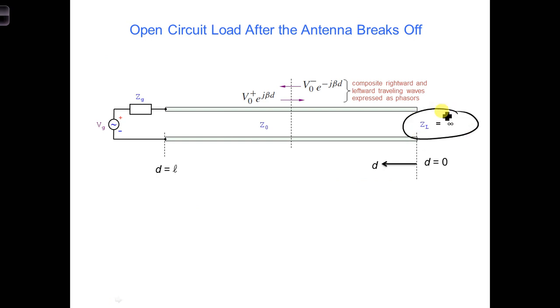What is the reflection coefficient for an open circuit? The voltage reflection coefficient at the load is infinity minus Z0 over infinity plus Z0, which is 1. As a result, all of the voltage waves incident on the load would reflect back towards the generator.